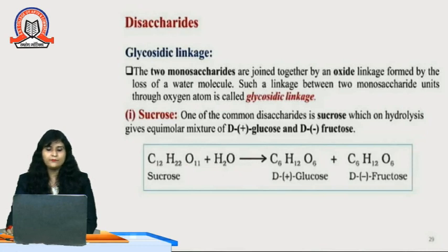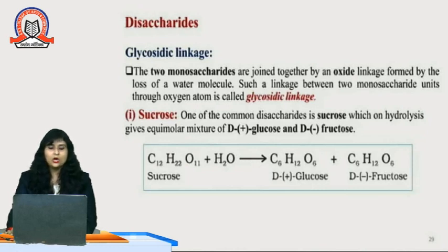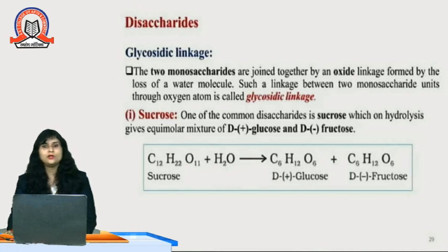For example, two monosaccharides are held together by a glycosidic linkage between C1 of alpha glucose and C4 of alpha glucose — you can see C1 and C4 carbon atoms linking together and losing one water molecule. Sucrose, one of the most common disaccharides, shows this glycosidic linkage. On hydrolysis, sucrose gives an equimolar mixture of dextro-positive glucose and dextro-negative fructose, yielding one unit of glucose and one unit of fructose.